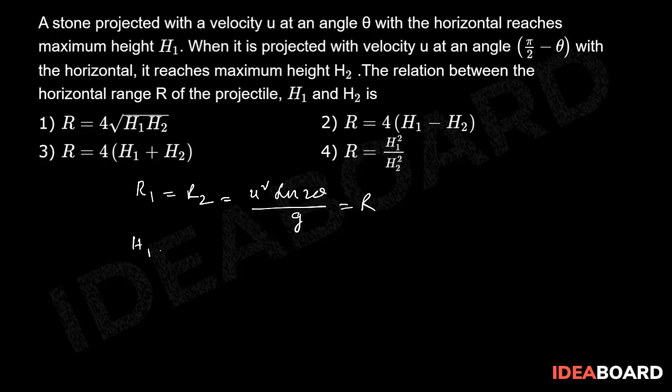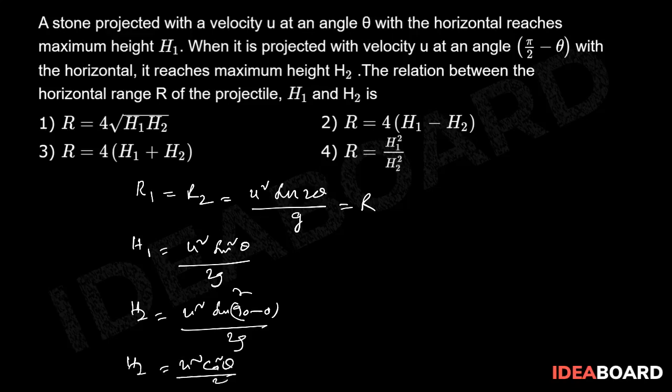And h1 equals u squared sine squared θ by 2g. h2 equals u squared sine of 90 minus θ whole squared by 2g. That is, h2 equals u squared cos squared θ by 2g.